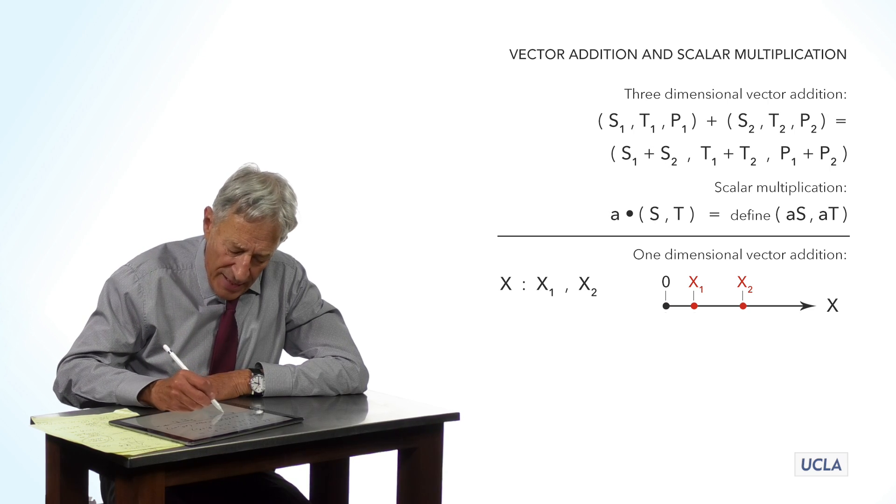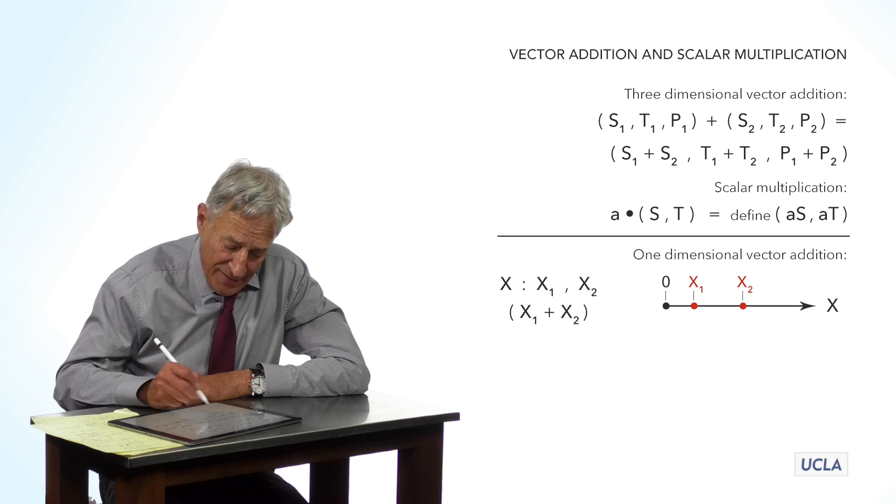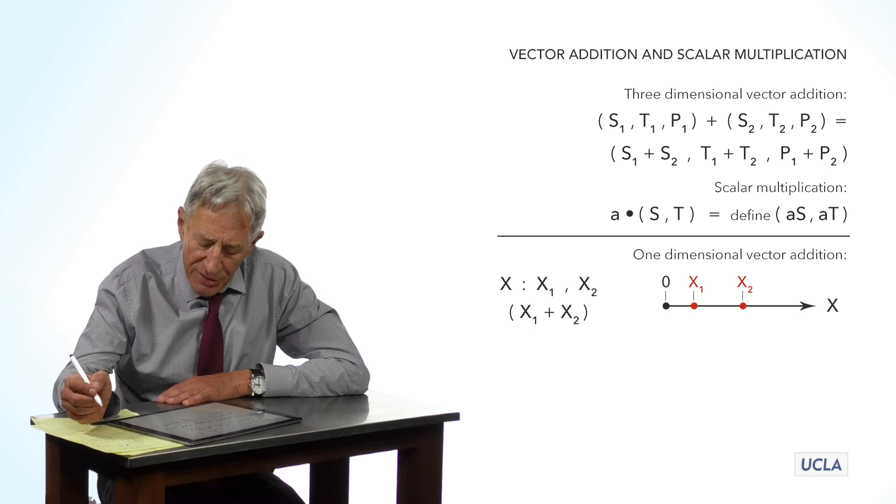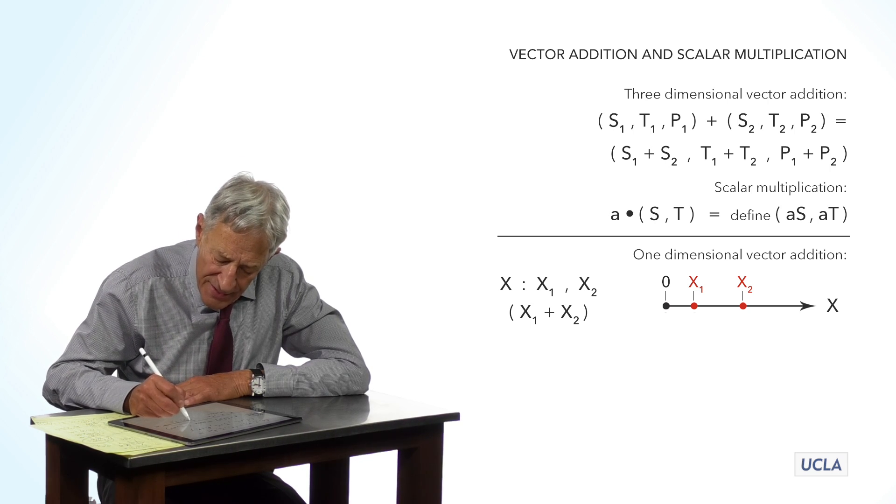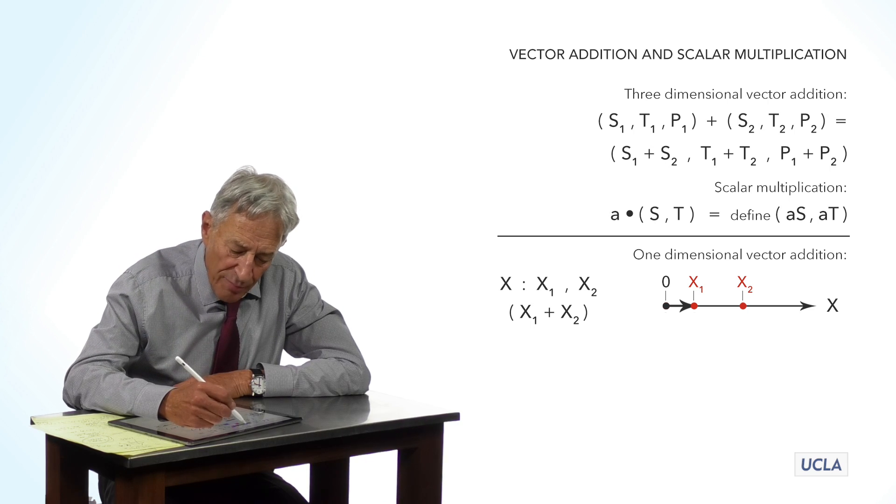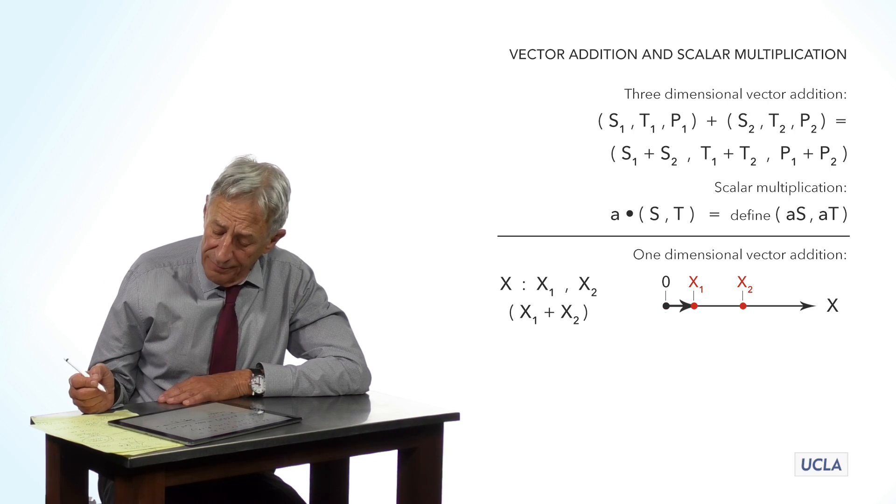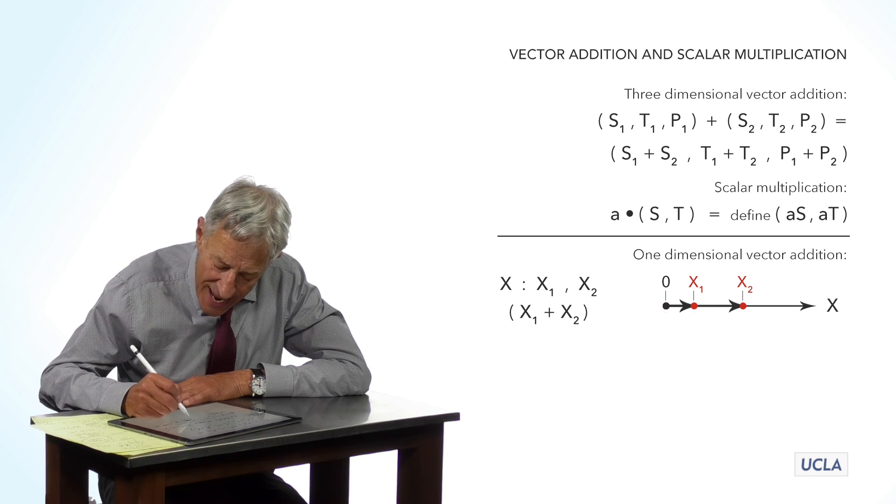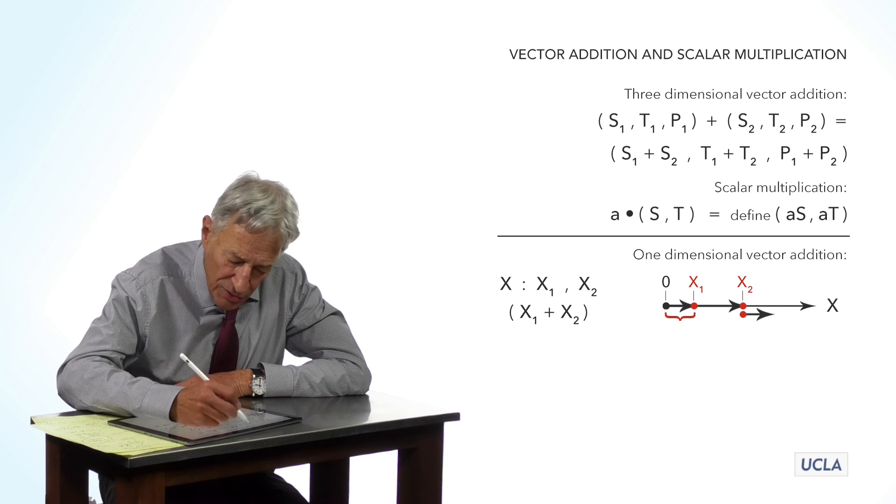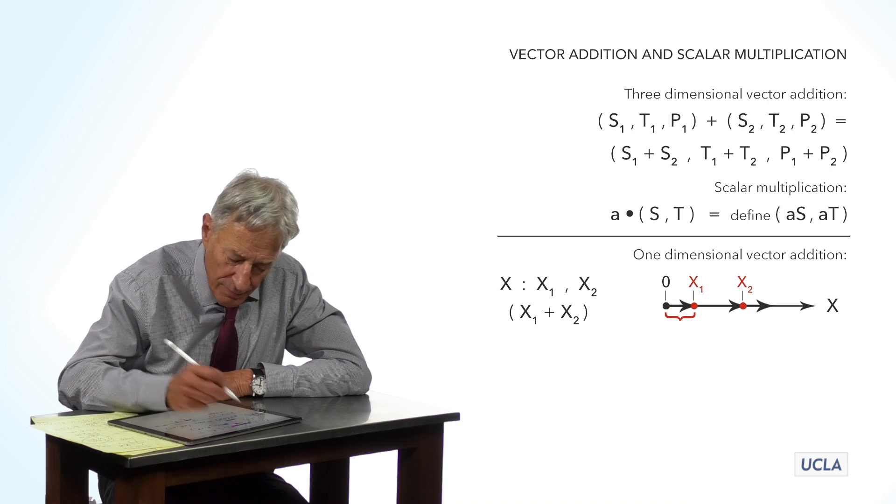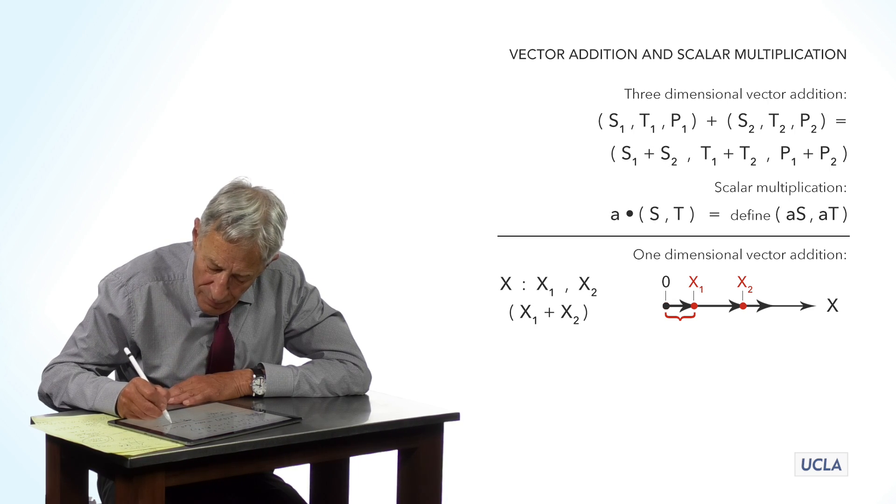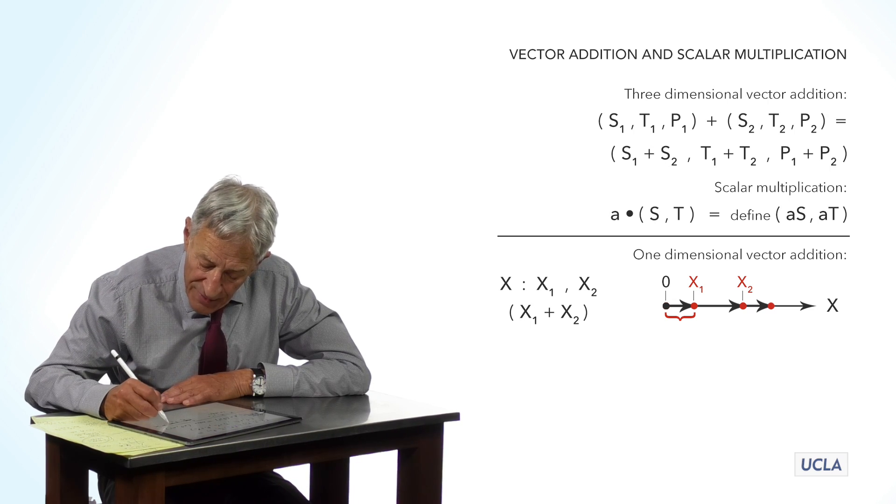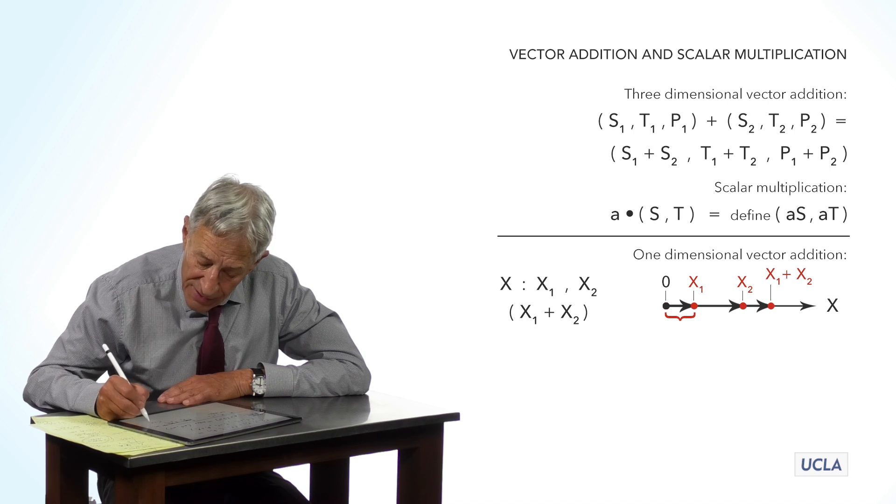So, we talked about how to add x1 plus x2 just by adding two numbers, but it's sort of interesting to look at that geometrically. We're going to take this arrow, which is the arrow representing the state point x1, and we're going to go over to x2, and we're just going to add this arrow right onto x2.